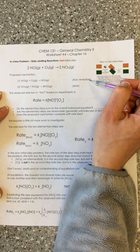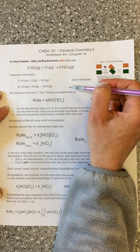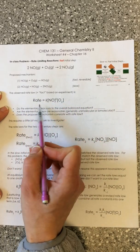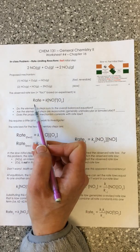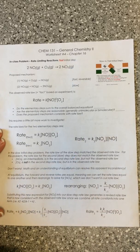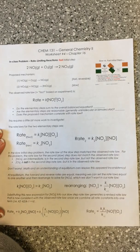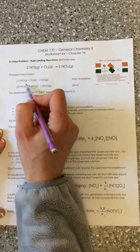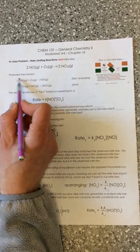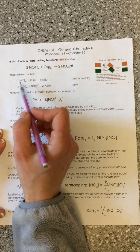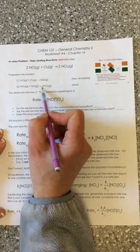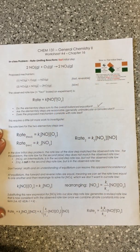In the proposed mechanism, the first step is fast and thus reversible, because it is limited by the slow second step. Remember, when we're validating a mechanism, we always need an experimentally determined rate law. Validating a mechanism involves three steps. The first is asking: do the elementary steps sum to the overall balanced equation? We can see that NO3 as an intermediate appears as a product of the first elementary step and is used up as a reactant in the second. We have two molecules of NO involved in both steps, we use up O2 in the first step, and generate two product molecules. So yes, our elementary steps do sum to the overall balanced equation.